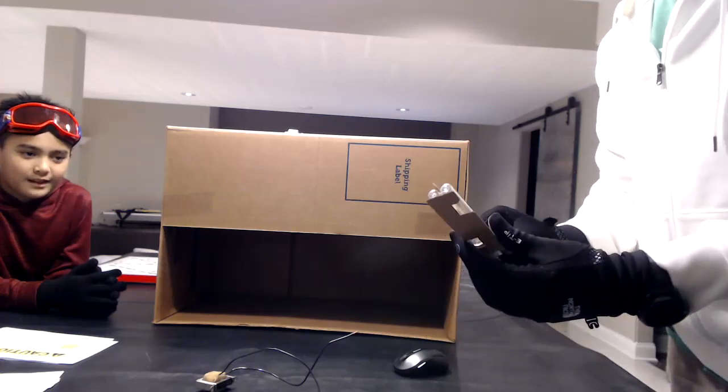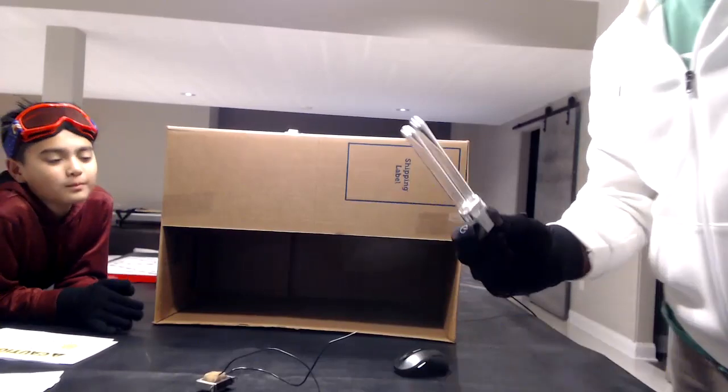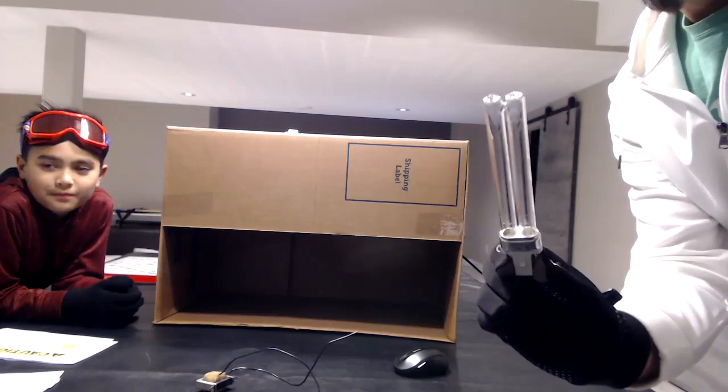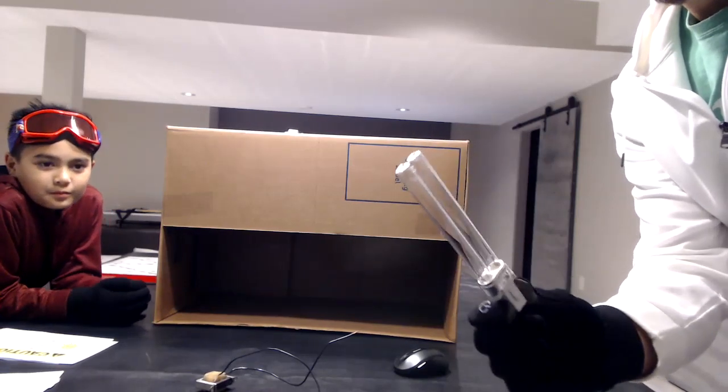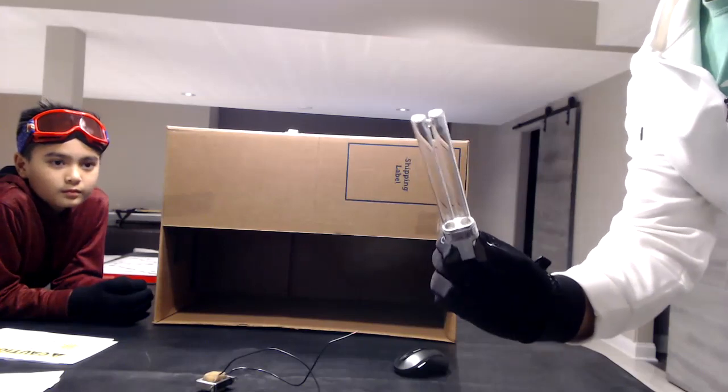Germicidal bulb. So we got these, we got some of them on eBay, we got some of them on Amazon. What this has is this has a mercury tube in here that creates a UVC light which is 254 nanometers.